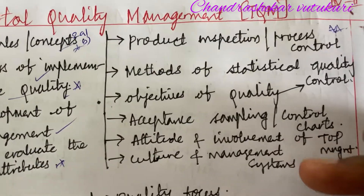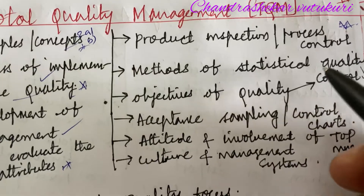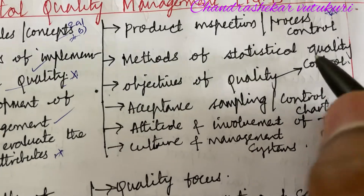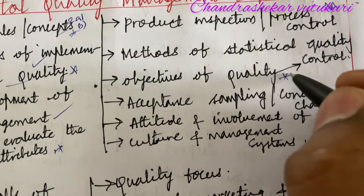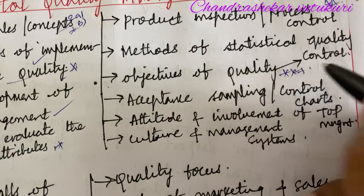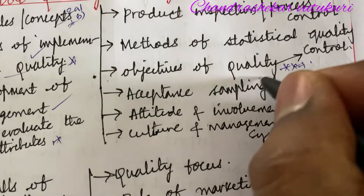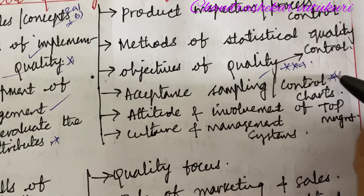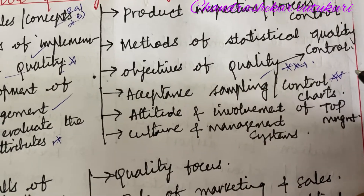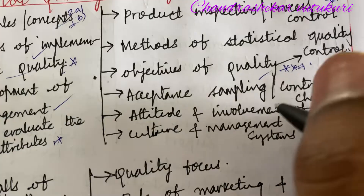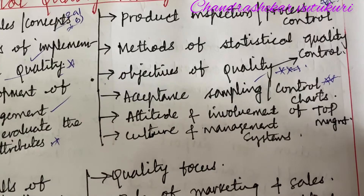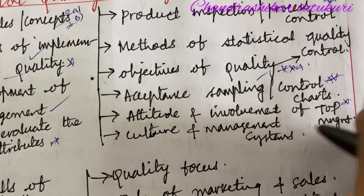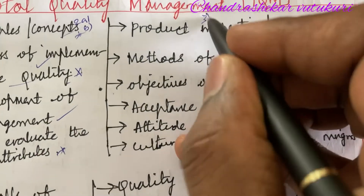Product inspection versus process control is set as the topmost question which may occur this time in the question paper. Methods of statistical quality control and the objectives of quality control is a short question. Acceptance sampling and control charts are very important from this part of Unit 1.